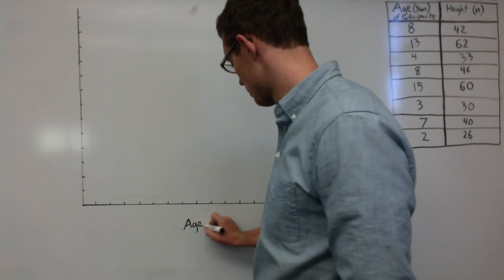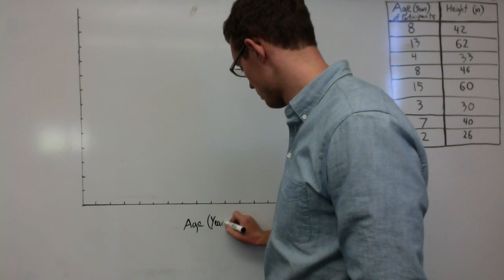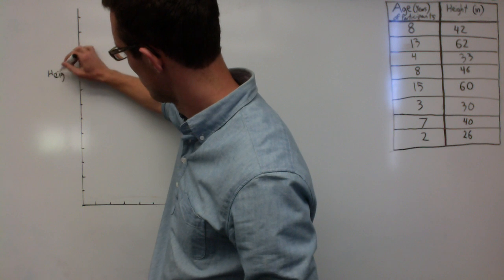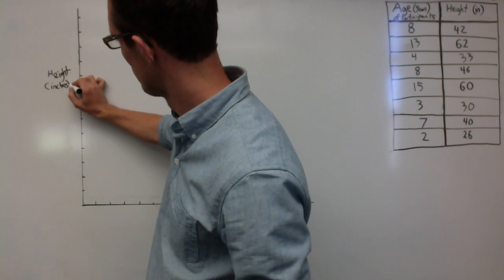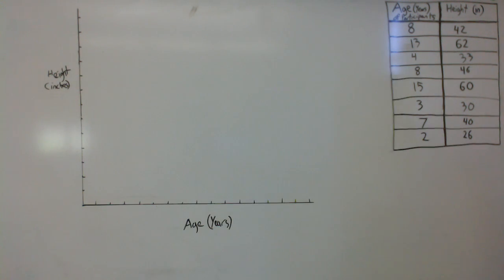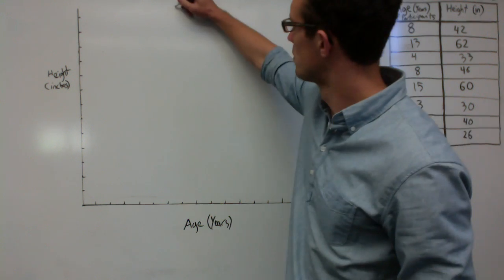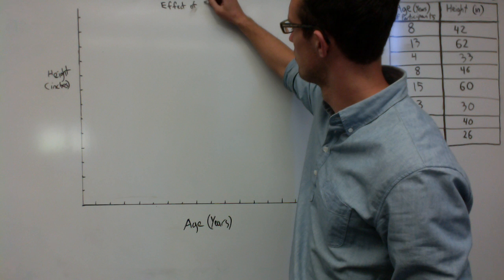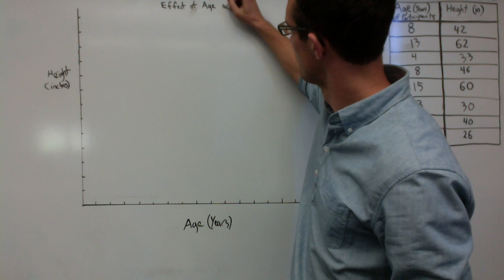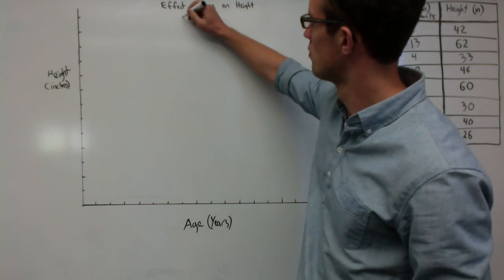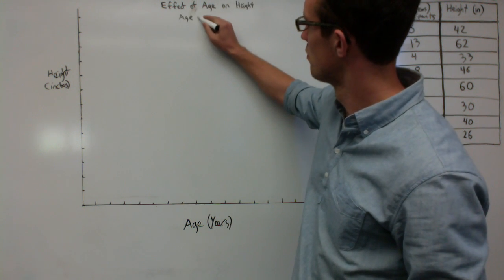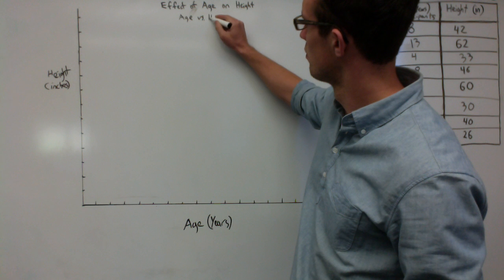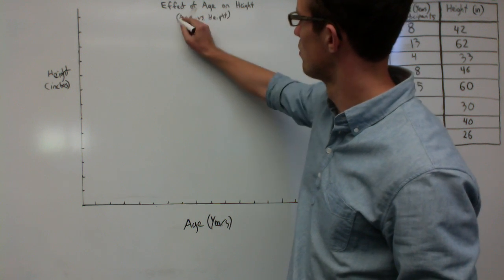So let's label those: age on the x-axis and height on the y-axis. Be sure to include the units for each. Now we can make a simple title — the effect of the independent variable upon the dependent variable. In this case, the effect of age on height. A lot of scientists will abbreviate this to simply age versus height.